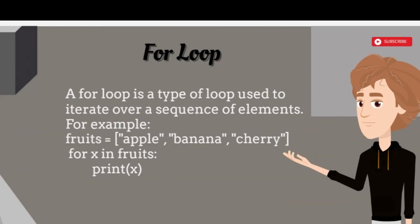For loop. A for loop is a type of loop used to iterate over a sequence of elements. For example: fruits = ["apple", "banana", "cherry"]. for x in fruits: print(x).